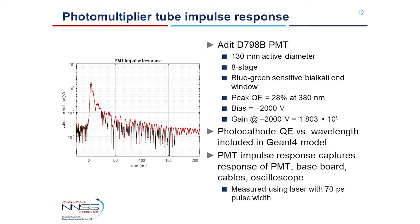We measured the impulse response of the PMT using a 70-picosecond laser perpendicular to and centered on the photocathode of the PMT. This measurement yields not only the PMT impulse response but also includes the effects of the bias board, cabling, and digitizer. The resultant PMT-only impulse response is shown in the plot on the left.